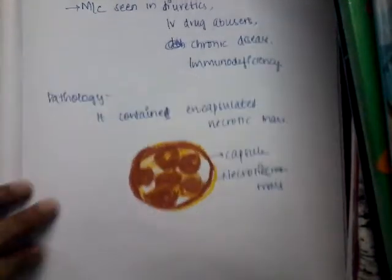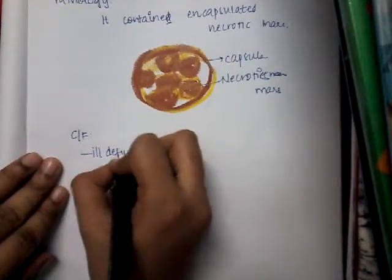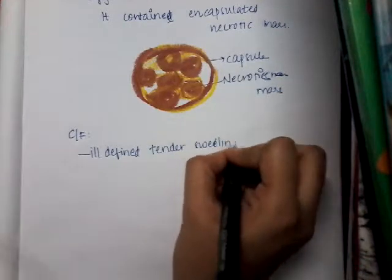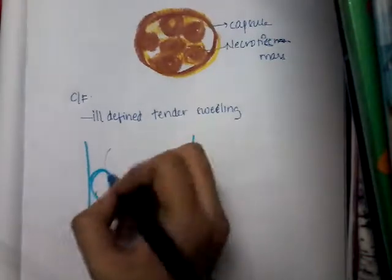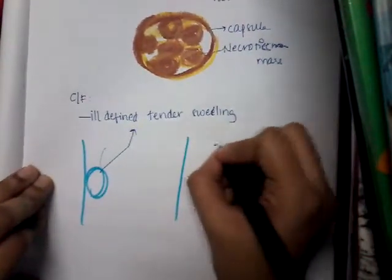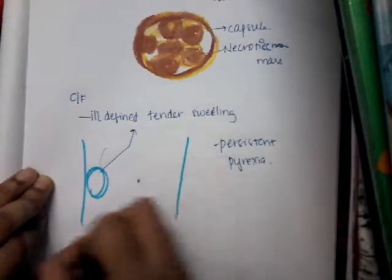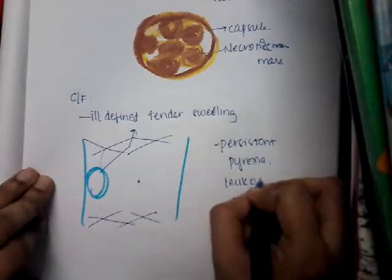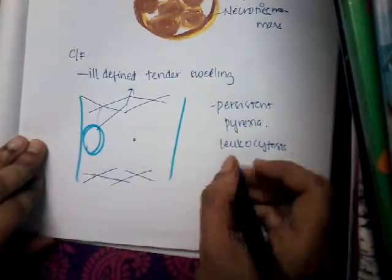The clinical features include an ill-defined tender swelling in the loin, as you can see here. There is also persistent pyrexia and leukocytosis — increased leukocytes. This presentation simulates a perinephric abscess and is similar to it.